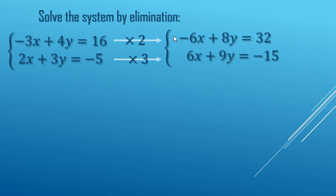Negative 3 times 2 is negative 6. 4 times 2, 8. 16 times 2, 32. Bottom equation, 2 times 3, 6. 3 times 3, 9. Negative 5 times 3, negative 15.